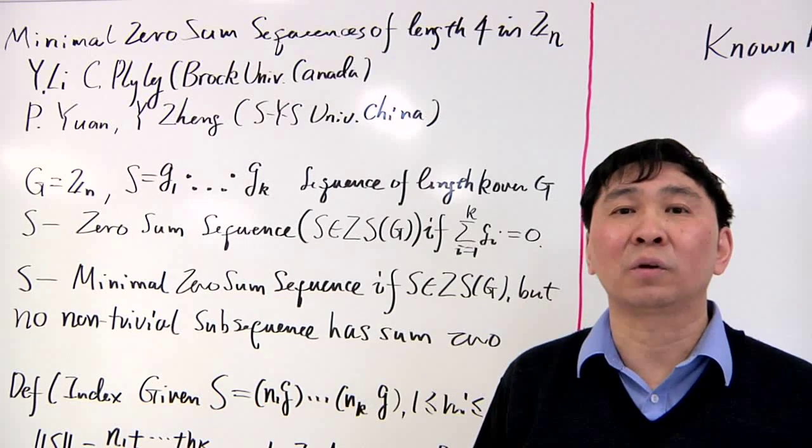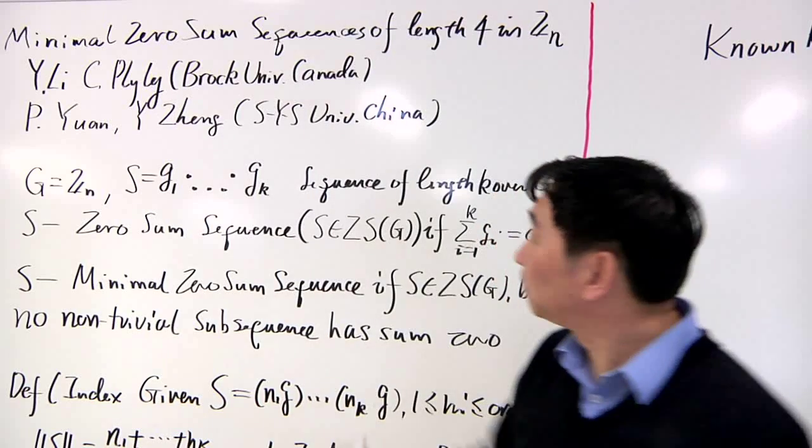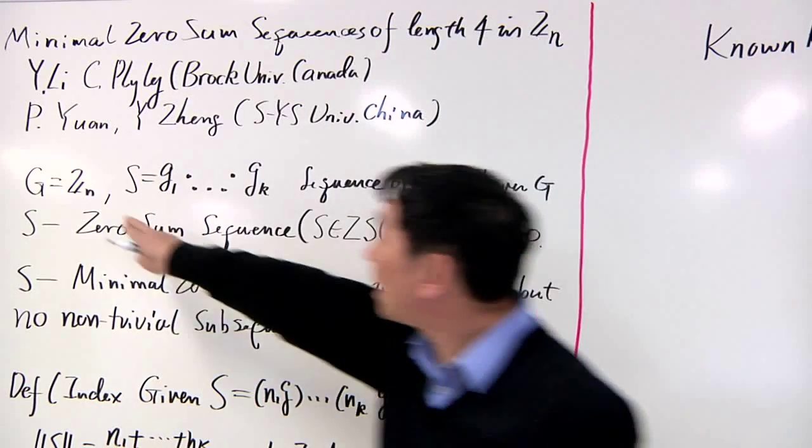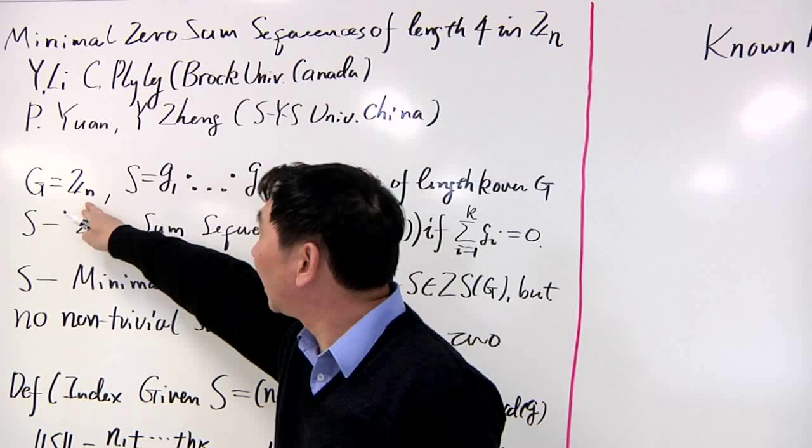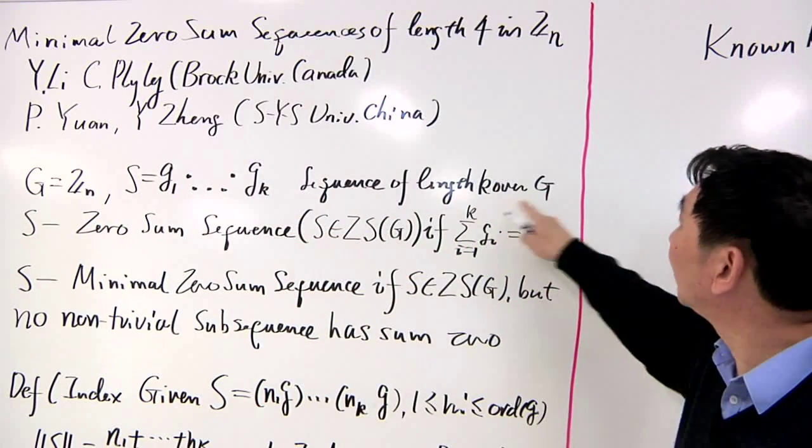Hello, I would like to tell our new result about minimum zero-sum sequences. Let m be a cyclic group of order n, and s be a sequence of length k over g.